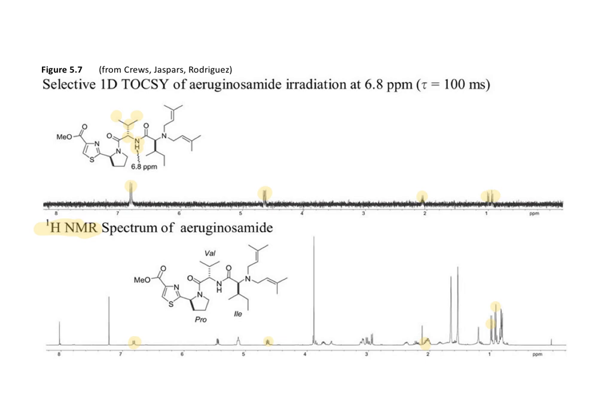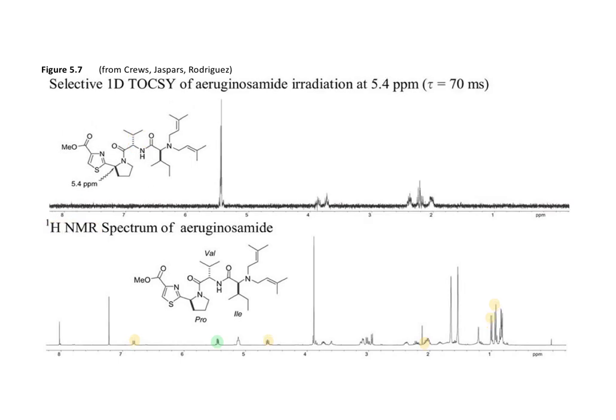We can continue working our way with the next deshielded proton. This now focuses on the proton at 5.4 parts per million, and that shows connections with this group of protons, which corresponds with the seven protons of proline.